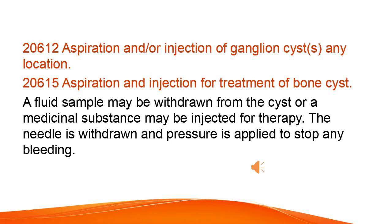Aspiration and/or injection of ganglion cyst(s), any location. Aspiration and injection for treatment of bone cyst. A fluid sample may be withdrawn from the cyst or a medicinal substance may be injected for therapy. The needle is withdrawn and pressure is applied to stop any bleeding.